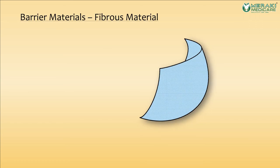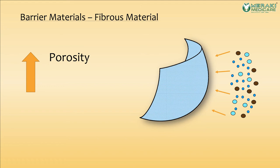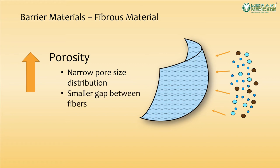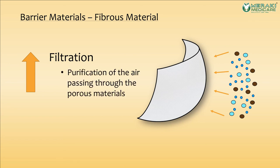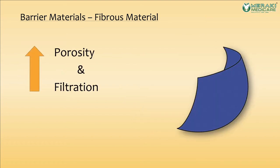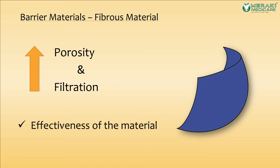For fibrous materials, a high degree of porosity means a higher filtering capacity, with a narrow pore size distribution and smaller gaps between fibers. Macroporous materials may be used for particulate filtration and have less resistance to airflow, compared to microporous materials which have higher airflow resistance. The more highly porous a material, the less dense and durable it will be. Higher filtration means better purification of air passing through the porous materials, which is why some PPE has a multiple-layer design made of different fiber materials. Higher porosity and filtration determine the overall effectiveness of the materials for PPE design.